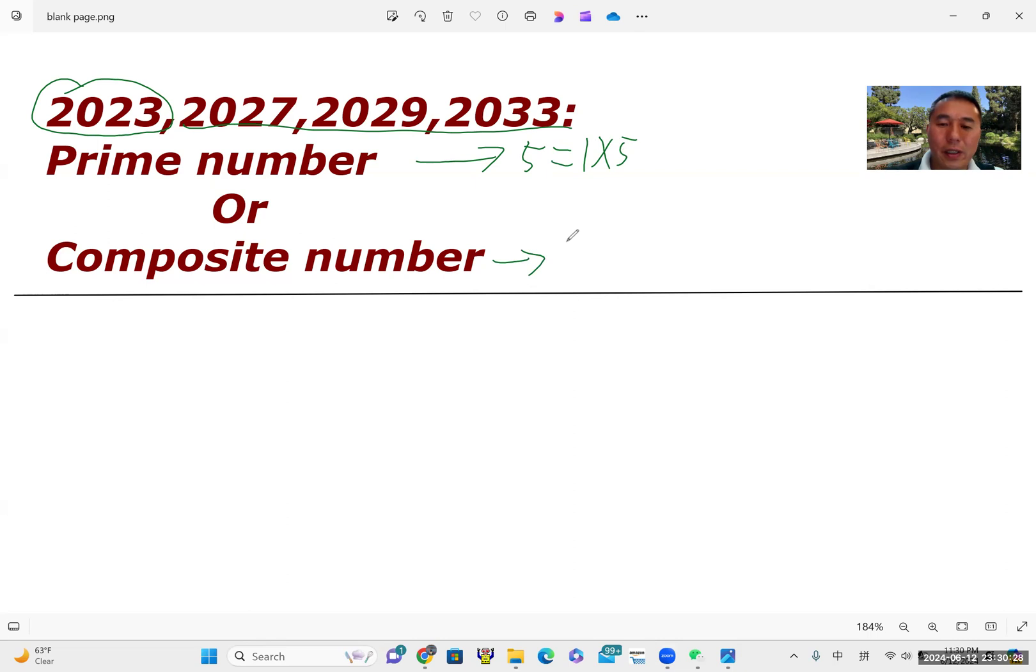Then six, for example. We know six can write as one time itself. Actually, each positive integer, or let's just call a counting number. You can always write as one time itself. But for six, you can also write as two times three. So we call one, two, three, six are factors of six. So if a counting number has more than two factors, then we call it a composite number.